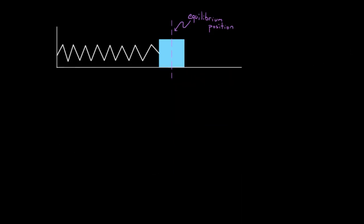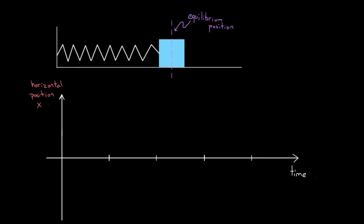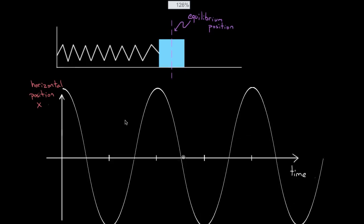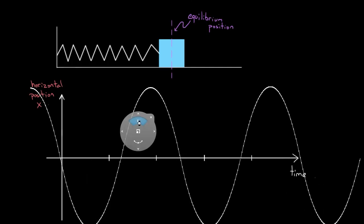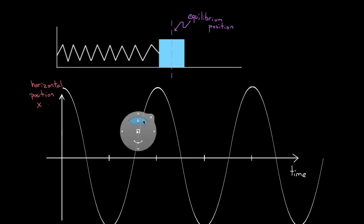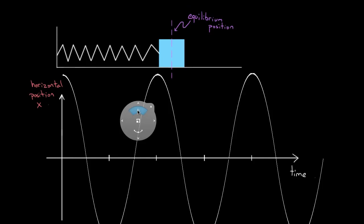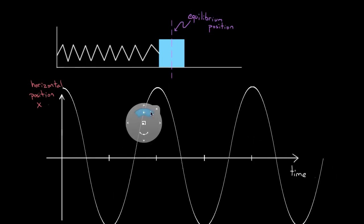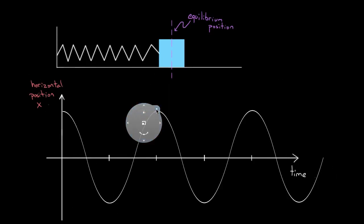If you were to look at this on a graph and you increase the amplitude, the graph would just stretch vertically — you'd have a bigger amplitude — but there would not necessarily be any stretch horizontally. If you leave everything else the same and only change the amplitude, the period would remain the same. Changes in amplitude do not affect the period.